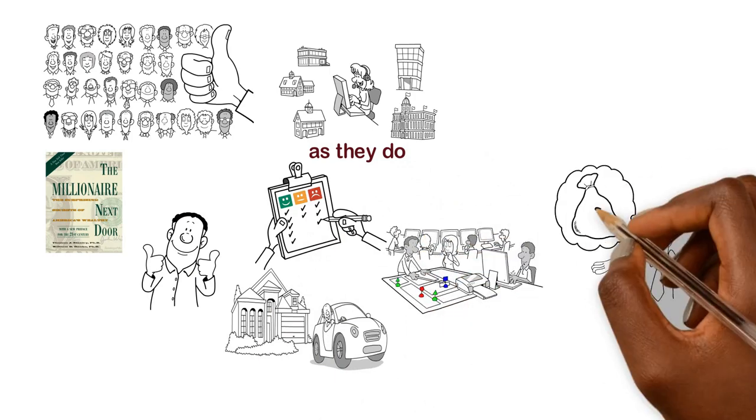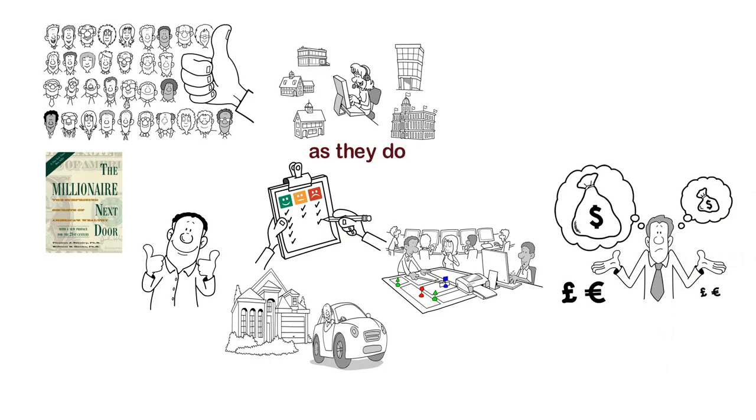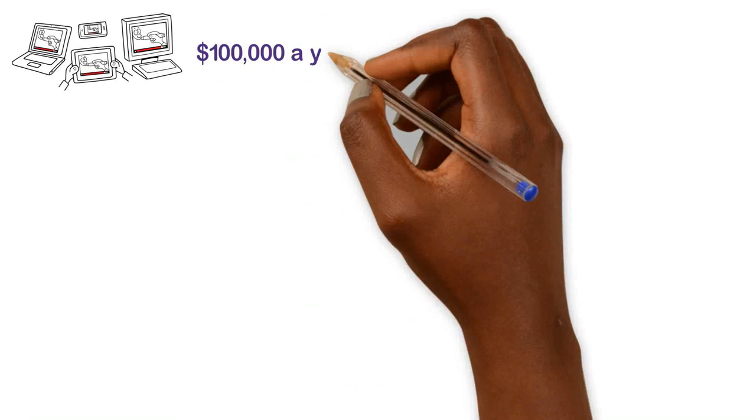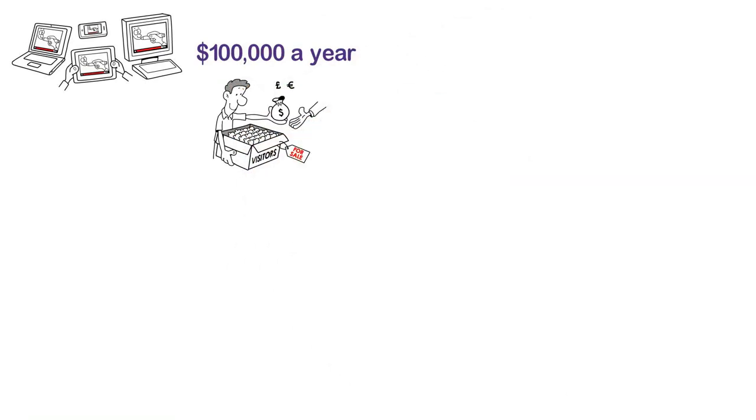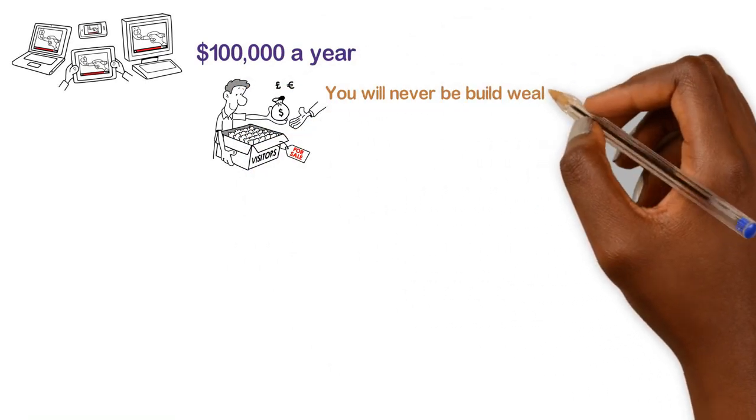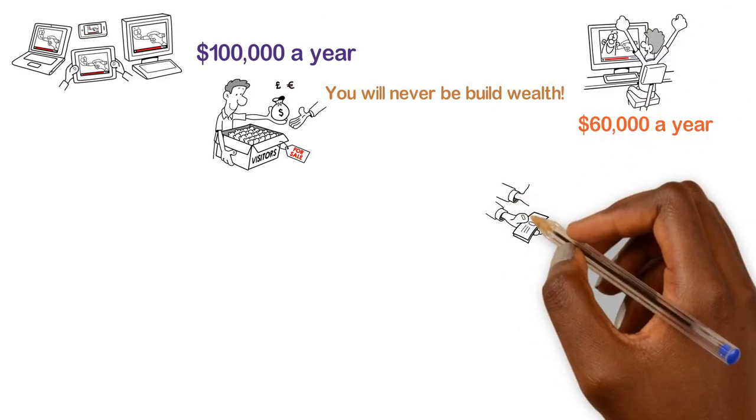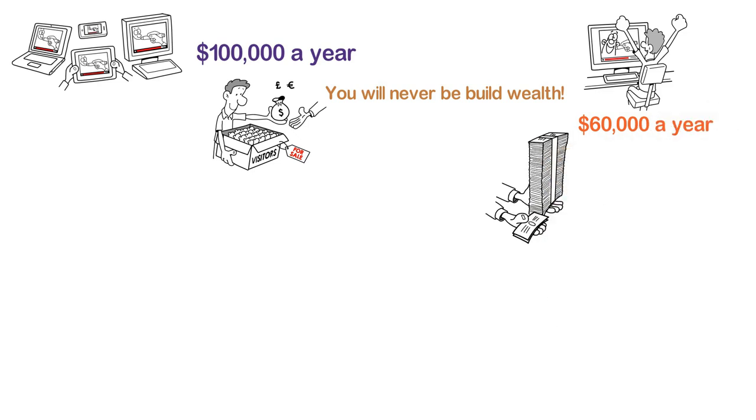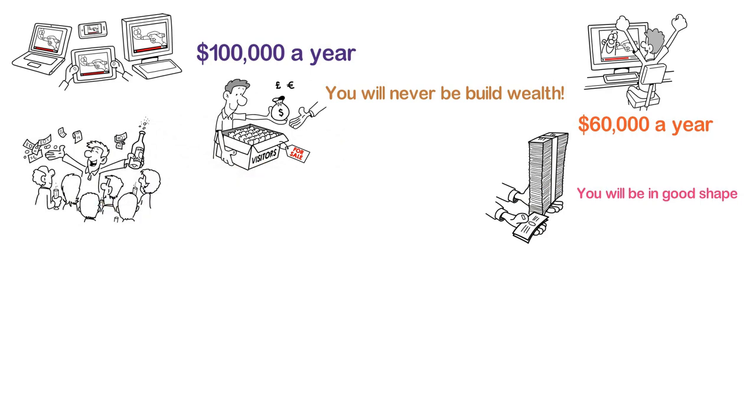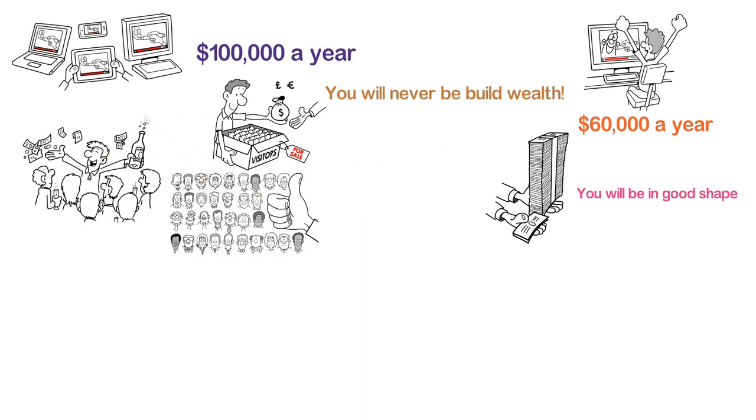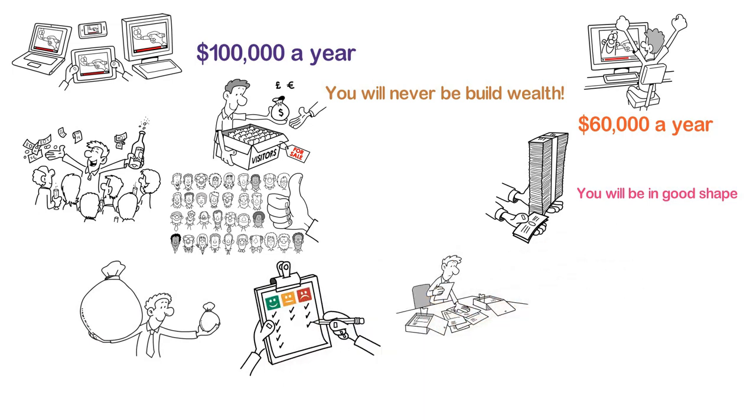At the end of the day, it doesn't matter how much you make. What matters most is how much you save. If you make $100,000 a year but you spend $125,000 a year, you will never build wealth. But if you make $60,000 a year and you live on $30,000 investing the rest, over time you'll be in great shape. If you want to be wealthy, do what wealthy people really do. Have a budget, invest, and most importantly, prioritize living below your means and financial security over social standing.